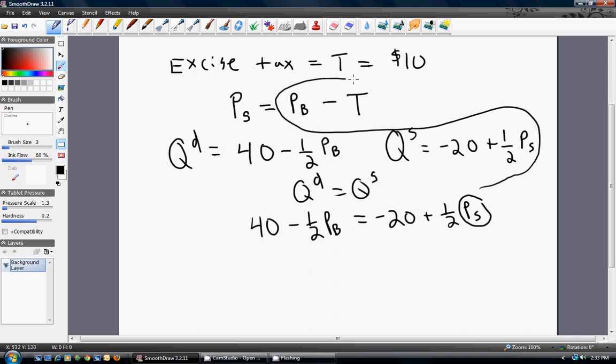So we're going to go ahead and put this expression in for P S. So the price that sellers receive is the price that the buyers pay them for the unit minus the tax paid to the government.